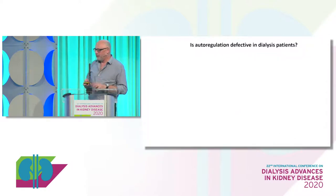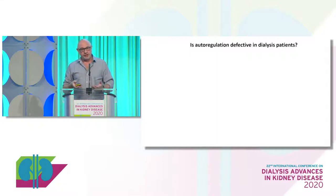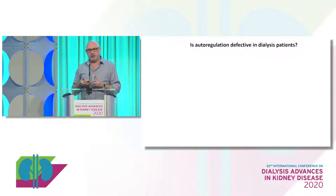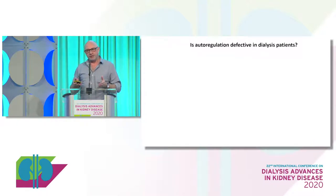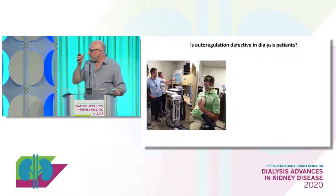Now, if we're going to subject those brains to those stresses, the brain can still auto-regulate, can't it? It can still maintain perfusion over a range of blood pressures — surely the brain can protect itself. Unfortunately, this is not true.